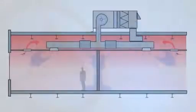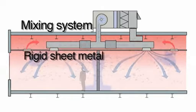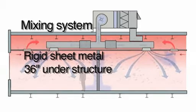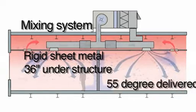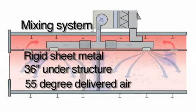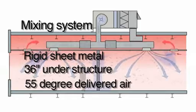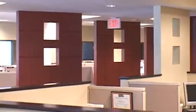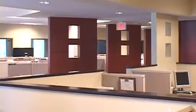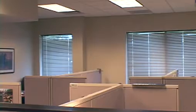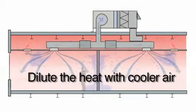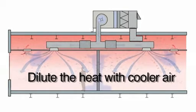Overhead ducted systems are generally mixing systems with a lot of sheet metal and the labor to fabricate and install it. Occupying about 24 to 36 inches below the structure, they usually deliver 55-degree air at relatively high velocities through diffusers mounted high in the space. These systems push large amounts of conditioned air into the existing occupied air space that is being heated by people, electronics, lights, exterior walls, etc. The job of a mixing system is to dilute that heat back into the space with enough cooler air to maintain the desired space temperature.